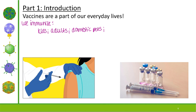We even immunize wild animals. One way we do this is by dropping bait containing an oral rabies vaccine in areas where rabies is present in the animal population. Animals are lured in with food, they bite the bait, and they get vaccinated against rabies. Because of immunization and vaccines, many childhood diseases are rare nowadays.